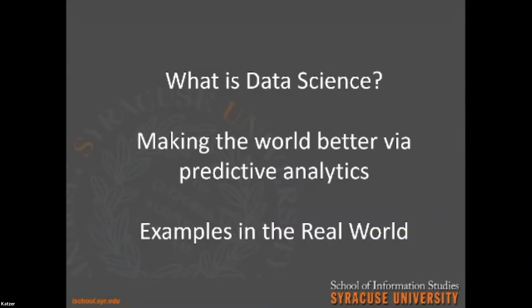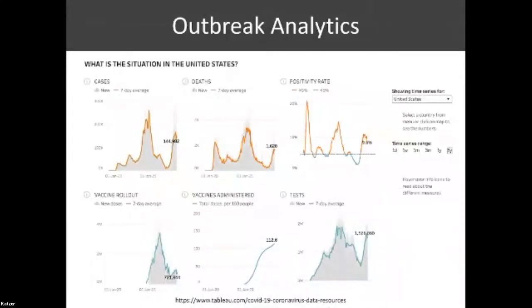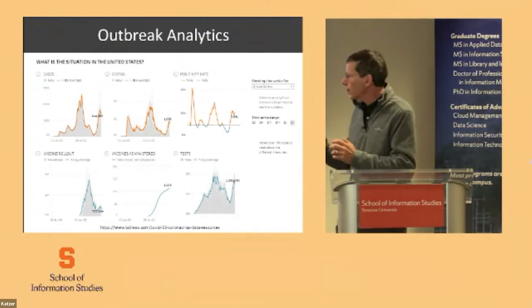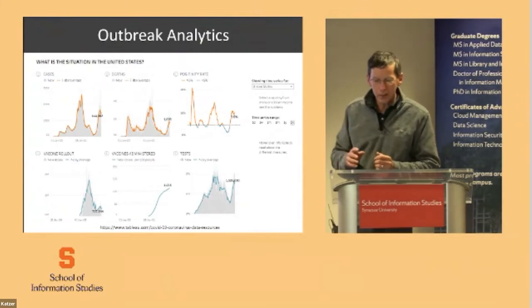Now I want to go through some examples in the real world. The first one I want to talk about is outbreak analytics. Outbreak analytics is where data scientists work to try to understand infectious disease and how they spread, and the patterns of how they spread. Unfortunately, something like this is maybe more common than people would have thought about two years ago. This is about COVID and different trends, but also about different predictions about the future. Tomorrow morning you're going to hear a lot about it.